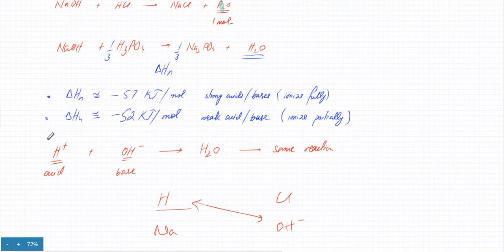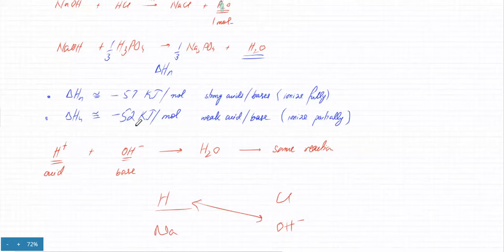The reason the enthalpy of neutralization is always the same for strong acids and bases is that the reaction is always exactly the same: the acid releases H⁺ ions, the base releases OH⁻ ions, and the reaction is H⁺ + OH⁻ → water. It doesn't matter whether the H⁺ comes from HCl, HNO3, H2SO4, or H3PO4 — the acid just contributes H⁺ and the base contributes OH⁻. The other ions are spectator ions.